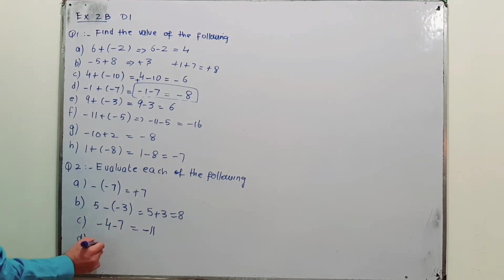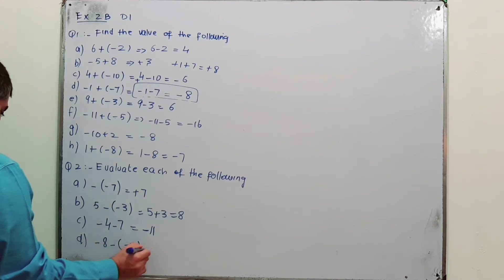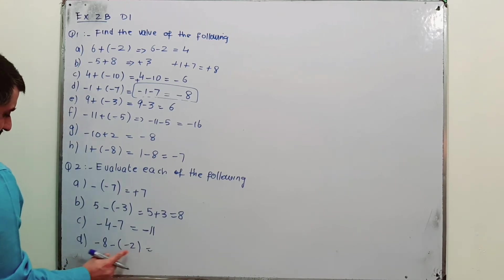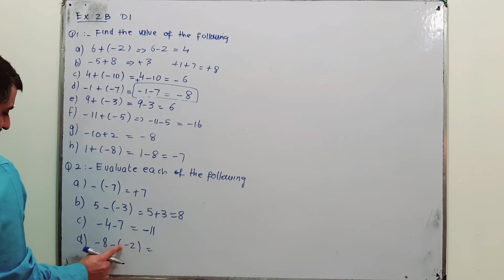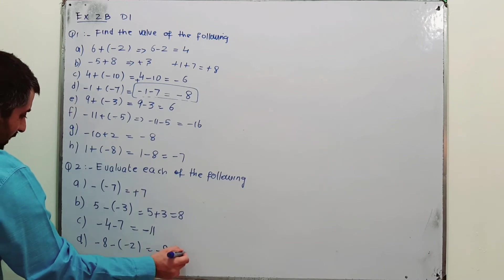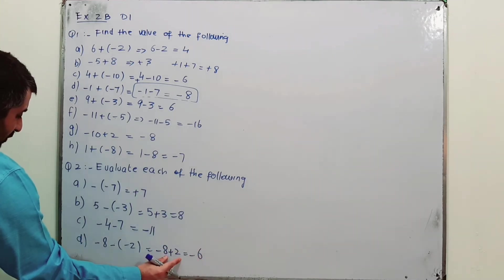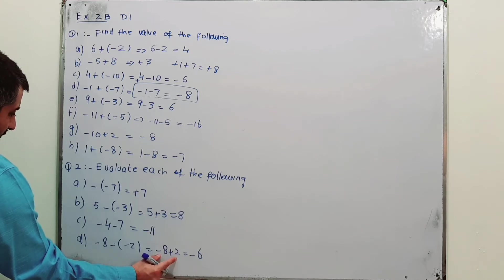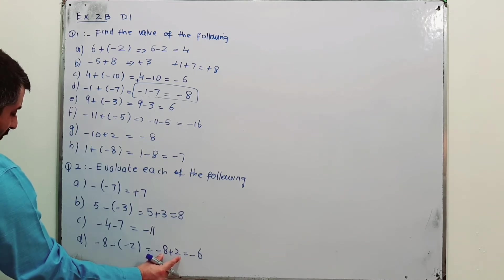Part D: minus 8 minus (minus 2). Open the brackets — the minus inside and minus outside are multiplied, so minus minus becomes plus. It becomes minus 8 plus 2. Signs are opposite, so subtraction is performed: minus 8 plus 2 is minus 6, since the bigger number carries the negative sign.